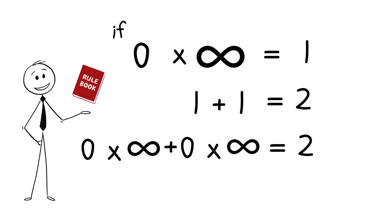Let's use the distributive property and factor out the infinity. Zero plus zero times infinity equals two. And what is zero plus zero? It's just zero. So zero times infinity equals two.